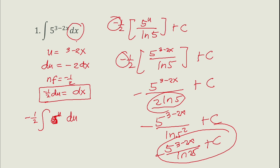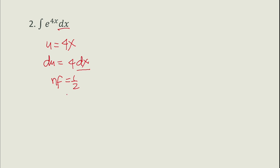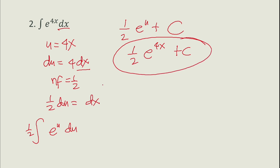For number two, the integral of e^(4x) dx. Let u equal 4x, so du equals 4 dx. Since we only have dx, the normalizing factor is one quarter, giving one quarter du equals dx. So the integral becomes one quarter times the integral of e^u du, which equals one quarter e^u plus c, giving one quarter e^(4x) plus c.